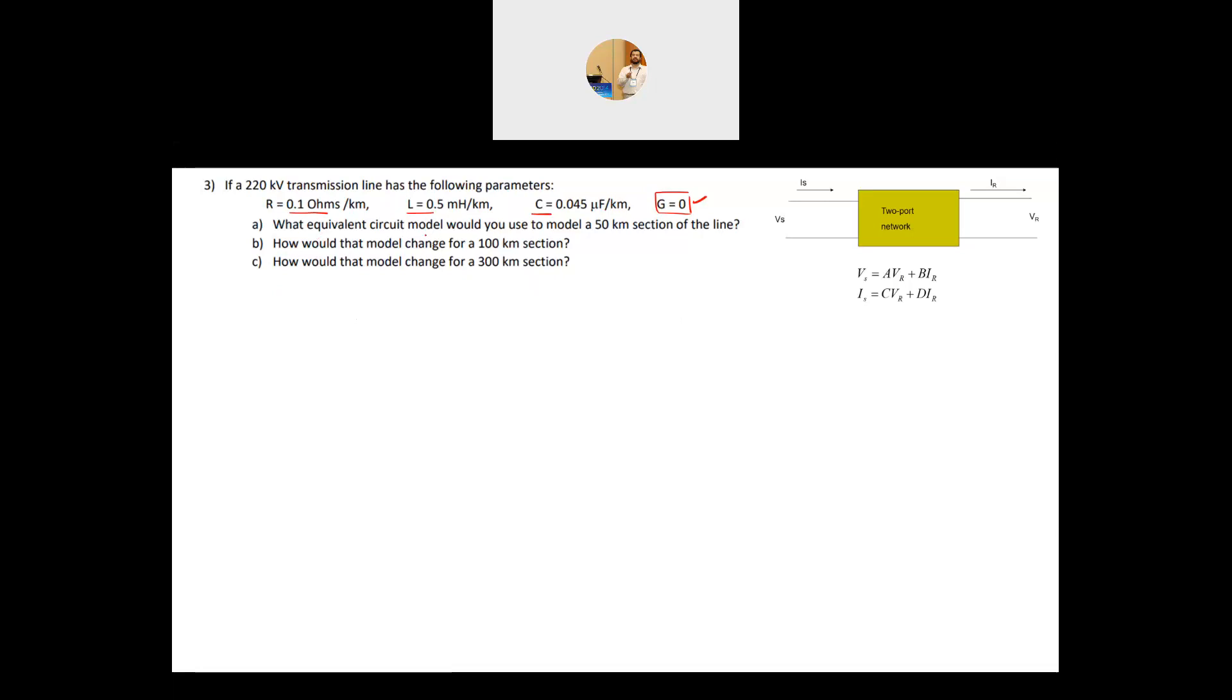It says, what equivalent circuit model would you use to model a 50 kilometer section of the line? So if you have only a 50 kilometer line of these parameters, how to model that? And basically we use for this, and I talked about that in the previous question, the two-port network for that. And in the two-port network, we have the model here, and this model will change. It depends on the distance. Here is the sending end, and here is the receiving end. And these equations are basically relating the sending to the receiving end.